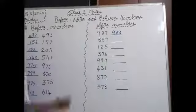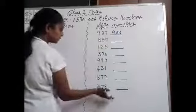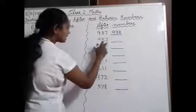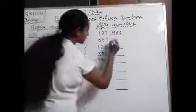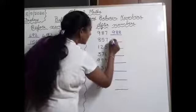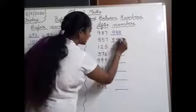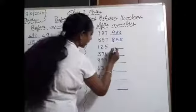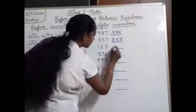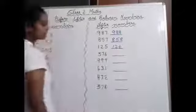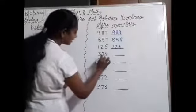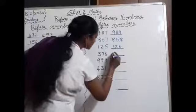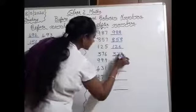Same way we have to find after numbers for the others. 857 blank — which number comes after 857? 858. Next, 125 — after that, 126. Next, 376 — after 376, 377.